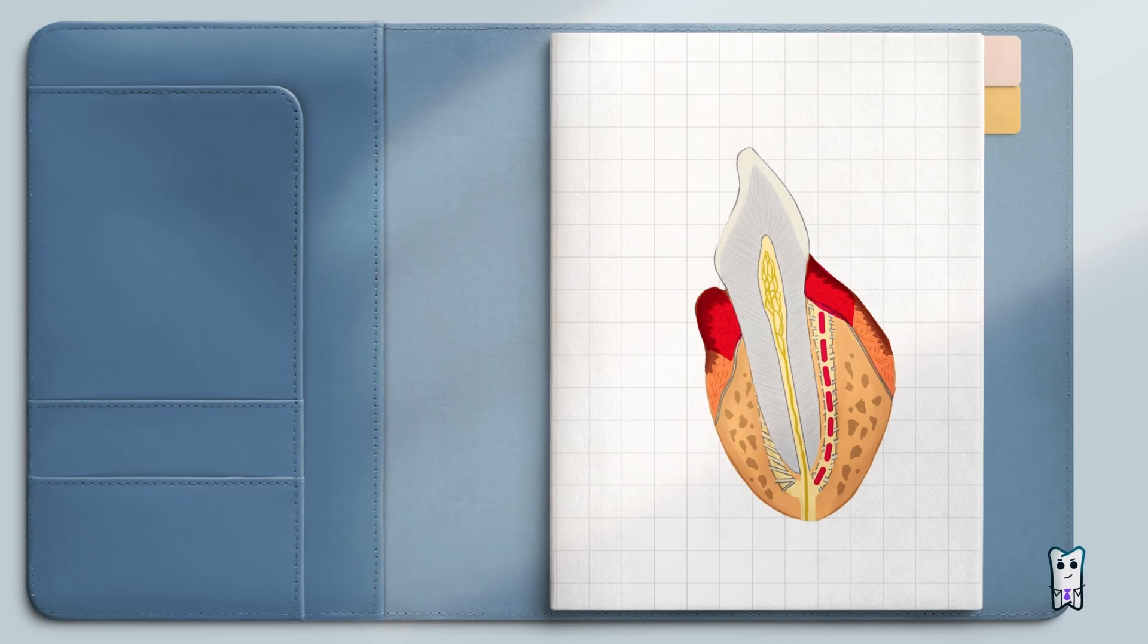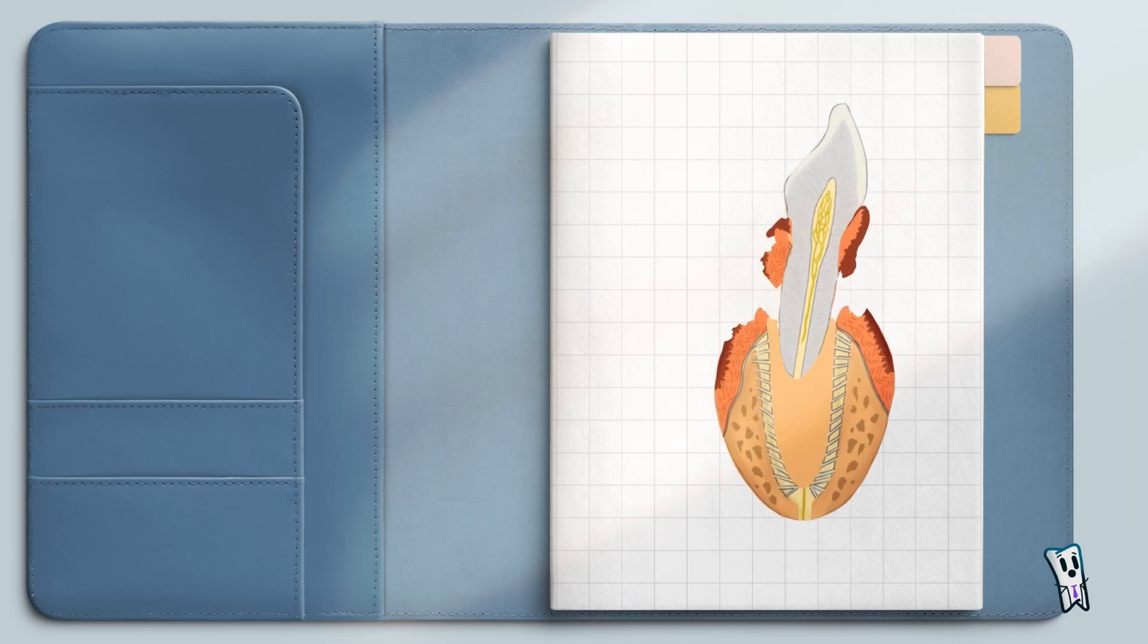Part of the gingiva may remain attached to the tooth and tear away from the alveolar crest. This will lead to the formation of soft tissue wound. So proper syndesmotomy will decrease the chance of trauma to the gingival tissues.